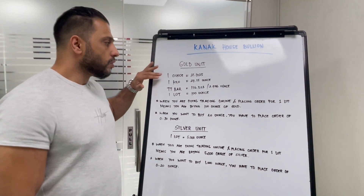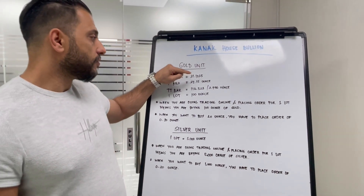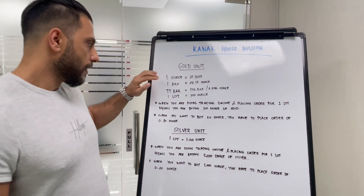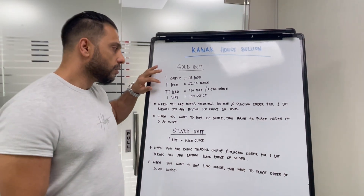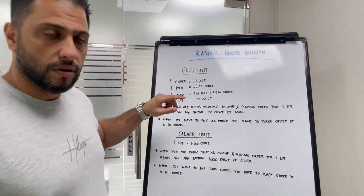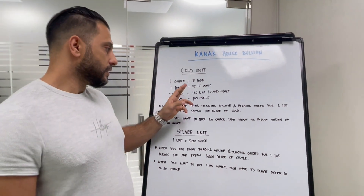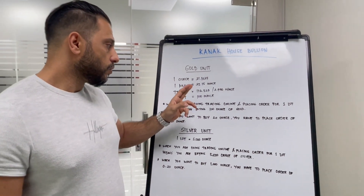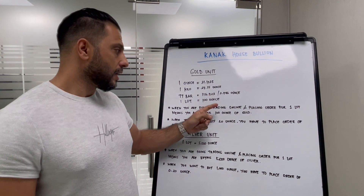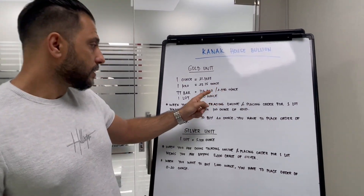One ounce equals 31.1035 grams. One kilo equals 32.15 ounces. A TT bar is equal to 116.523 grams, which is 3.746 ounces.